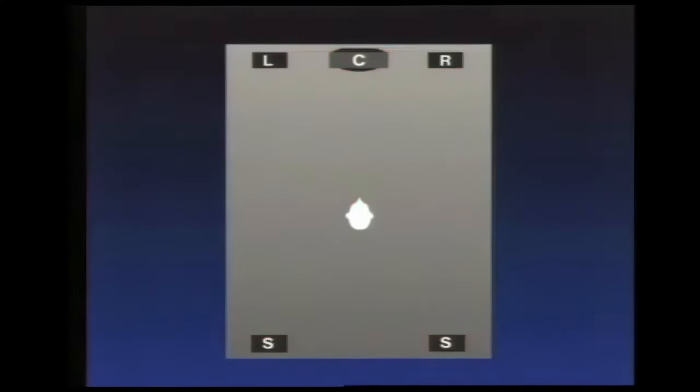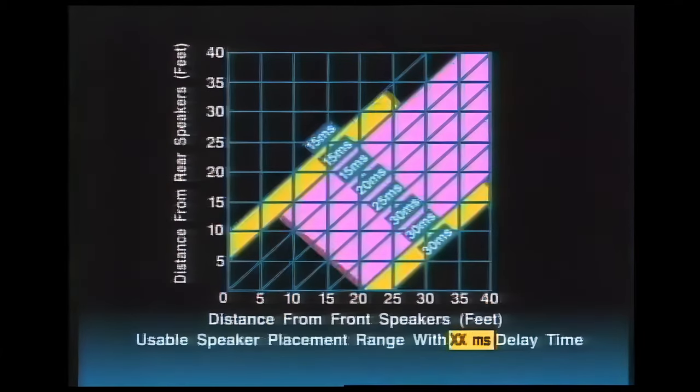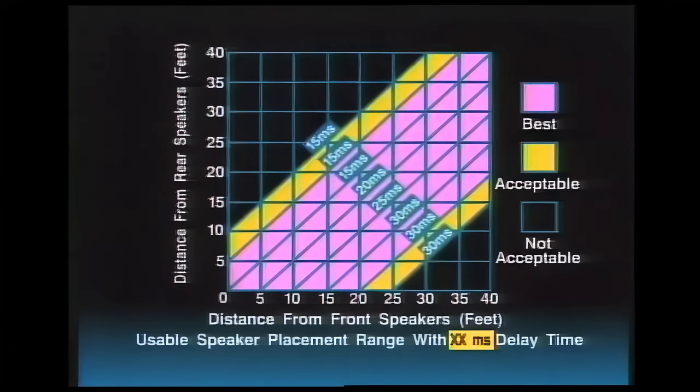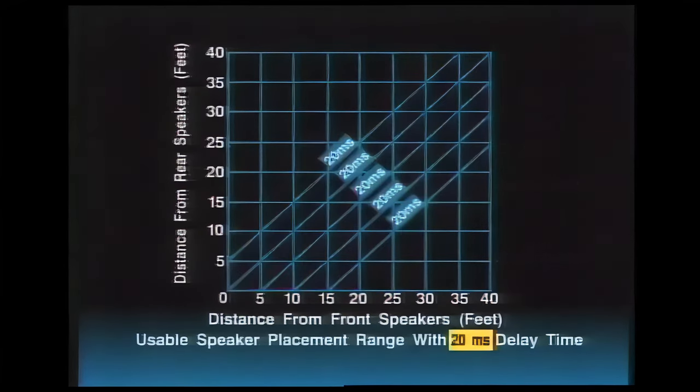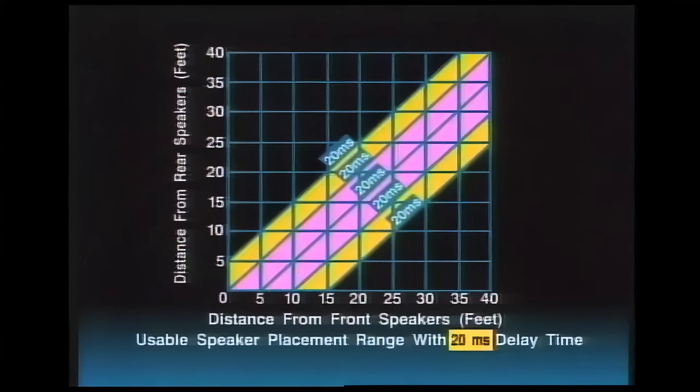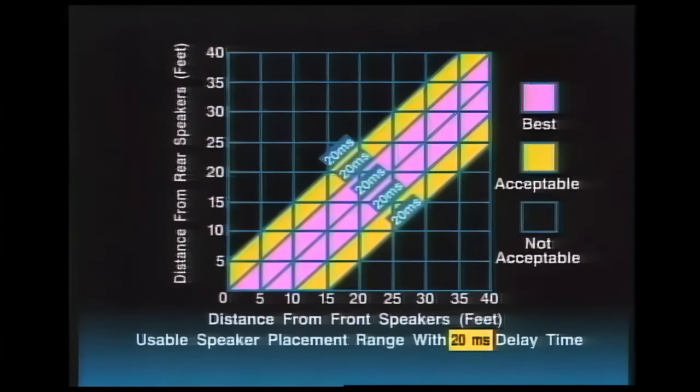Once the room is arranged, you can check the surround channel time delay. Most setups can use the normal 20 millisecond setting with no need for further adjustments. However, if your seating area is unusually close to the front or to the surround speakers, a different setting may work better. To check, find the distance from your seating position to the front speakers and again to the surround speakers. The graph for adjustable decoders will show which time delay setting to select. For decoders with no adjustment, the graph for fixed 20 millisecond delay will show if your arrangement is within the recommended limits. These graphs are printed in the program supplement for your reference.